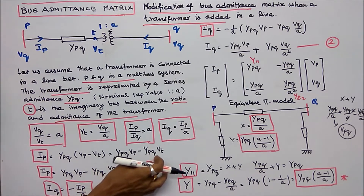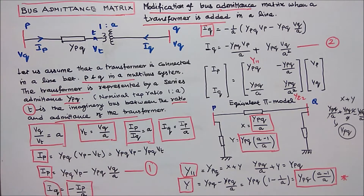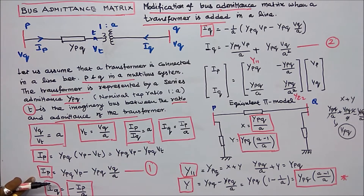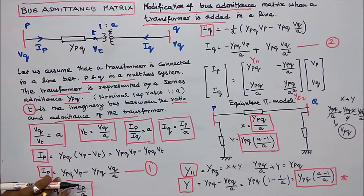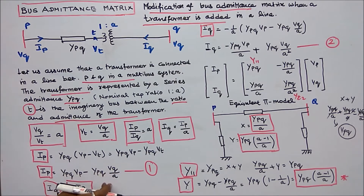Here VT is equal to VQ divided by A. Therefore IP is equal to YPQ multiplied by VP minus YPQ multiplied by VQ divided by A. This is equation 1.